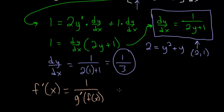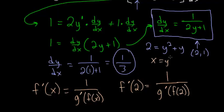If we want to evaluate the derivative of the inverse at the x value of 2, we need to plug it into our formula here so that we get g prime of f of 2. Remember that x equals y squared plus y is essentially our function f, though it's not solved explicitly for y. We know that when we plug in an x value of 2, we get a y value of 1. So f of 2 equals 1.